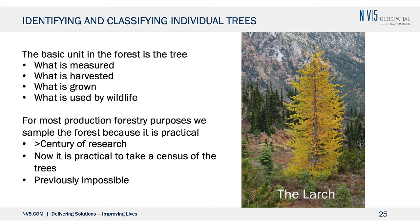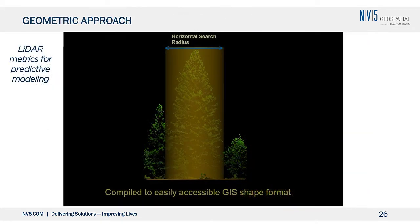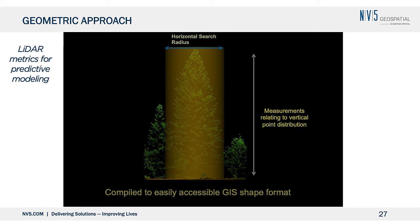I'm going to show you a couple of methods we use. The first is what we call a geometric approach — the simplest approach to delineating trees, which works really well for conifers. We identify the tips of the trees, search within each tip for the next maximum, and create a map that identifies where each tree is relative to its adjacent trees. This works because most conifers are conical. The problem comes with broadleaves, which often have very different shapes.